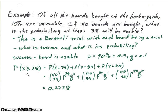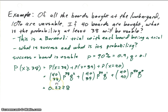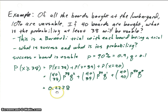The probability that out of 40 boards, 38 or more will be usable equals the probability of 38 usable, plus the probability of 39, plus the probability of 40. Once we have p, q, and n equals 40 defined, we plug into the binomial distribution: 40 choose 38 times p to the 38 times q to the 2, plus 40 choose 39 times p to the 39 times q to the 1, plus 40 choose 40 times p to the 40 times q to the 0. Plugging in those numbers gives 0.2228 as the probability of having 38 or more usable boards.